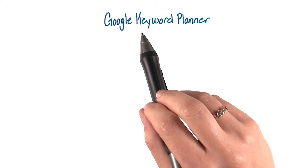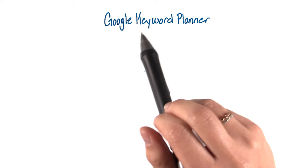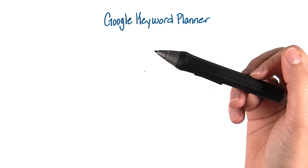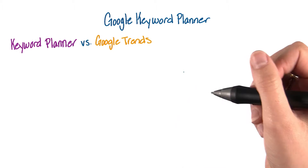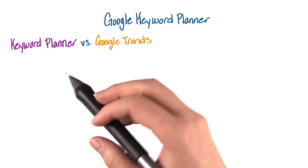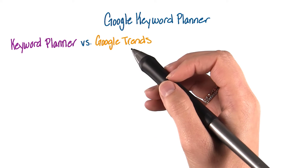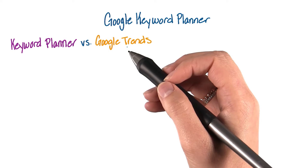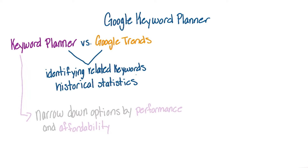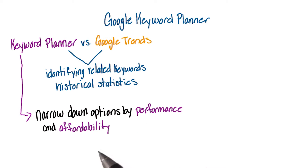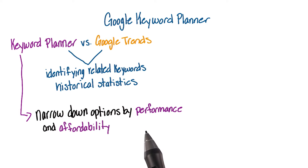Using what we found in Google Trends, you can further explore keyword options using Google Keyword Planner. Keyword Planner is an awesome tool that's similar to Google Trends in some ways, like identifying related keywords and seeing historical statistics. But the biggest difference is we get to narrow down options by their performance and what we can afford.